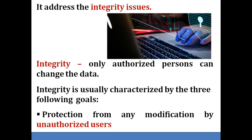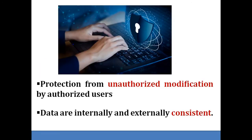Integrity is usually characterized by three goals. The first goal is protection from any modification by unauthorized users. The second goal is protection of data from unauthorized modification by authorized users. Here the problem is not with the outsider, but with an inside authorized person. In a bank, both the bank manager and bank cashier are authorized persons. For example, to modify the PAN number of a bank customer, only the bank manager is authorized. The bank cashier, even though an authorized person, cannot modify the customer's PAN number — he is not given authorization for this activity. Hence the goal here is to protect data from unauthorized modification by authorized users.